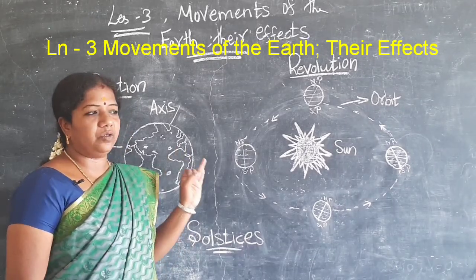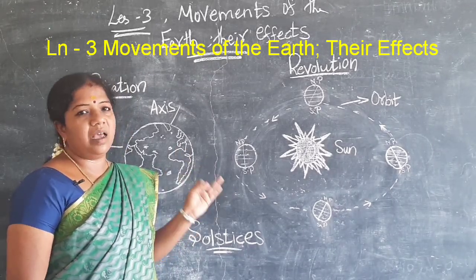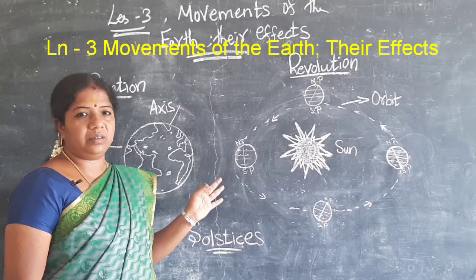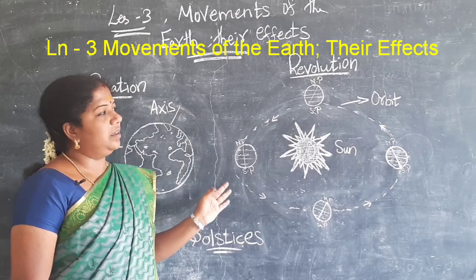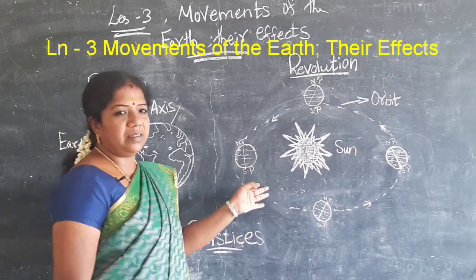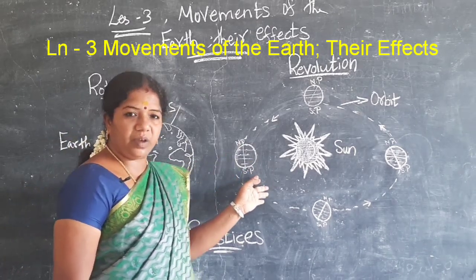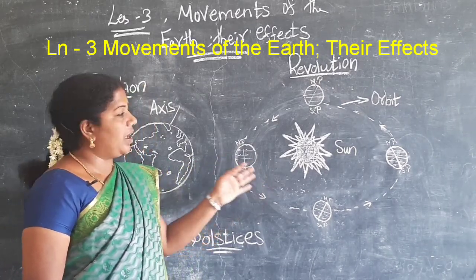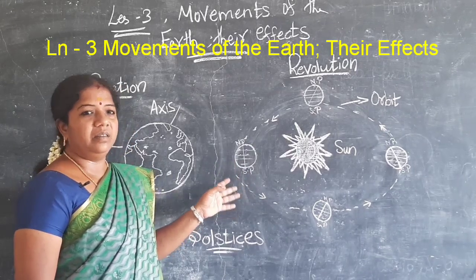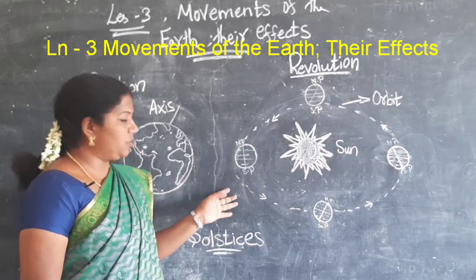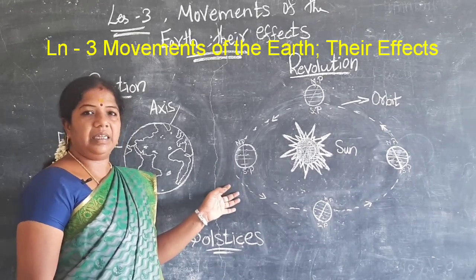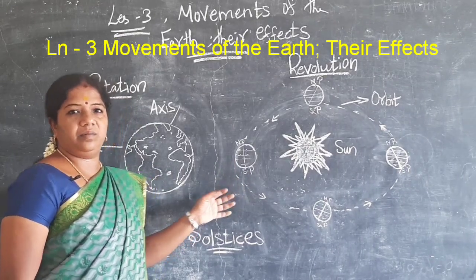To summarize: there are two movements — rotation and revolution. Rotation takes 24 hours and causes day and night. Revolution takes 365 days and causes seasons. Thank you, students. We will see you in the next lesson.